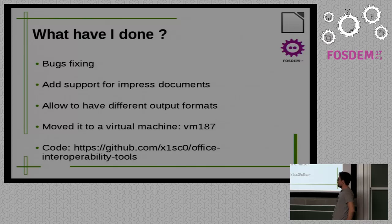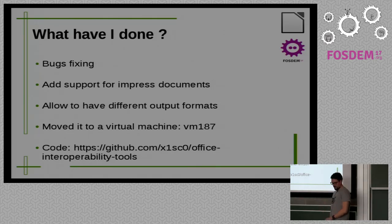I just started working on this tool, and I found some bugs in it, so I just fixed them. Then I also add support for impress documents. And then I added the possibility to have different output files. Because what Milos did was just you could use different input files, but there was only one output file. So now it's possible to have different output files. And now I moved it into a virtual machine. Now we have a virtual machine with 100 gigabytes, so we have plenty of space to use this tool. And here you can find my code.